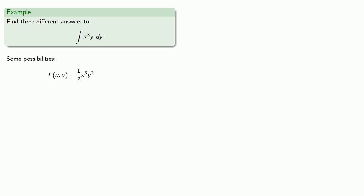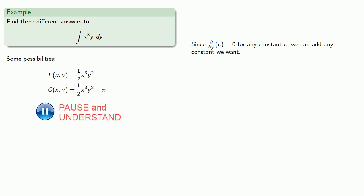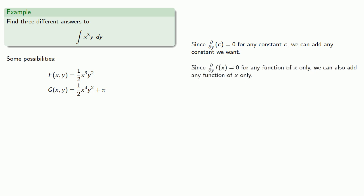To find other antiderivatives, keep in mind that we are differentiating with respect to y. The partial with respect to y of any constant c is 0, so we can add any constant we want. But there's more: since the partial with respect to y of any function of x only is also 0, we can also add any function of x only.